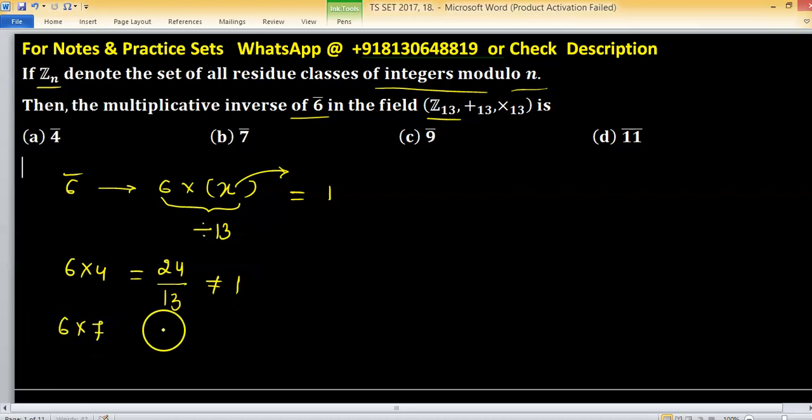If we take 7, 6 times 7 is 42. After dividing by 13, we are not getting 1. 6 into 9, we have 54, divided by 13, not getting 1.